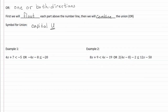In example one, notice that there are two separate inequalities. We need to solve them both first. We'll start on the side with our variable and add the opposite to our number. So we get four x is less than negative twelve. Divide by four, and we get x is less than negative three.